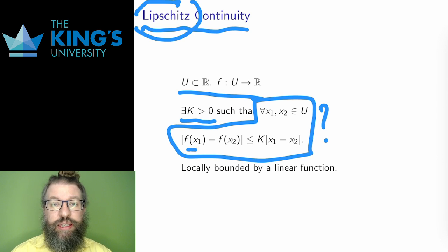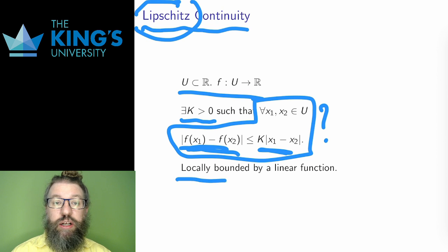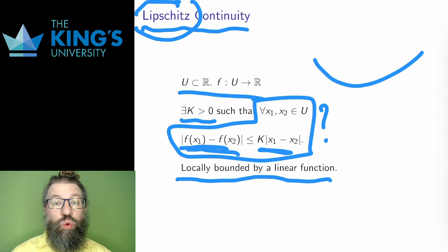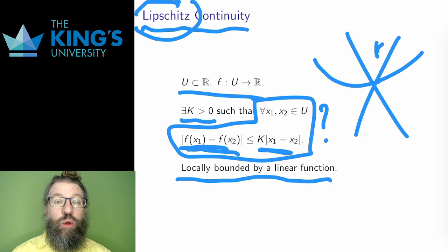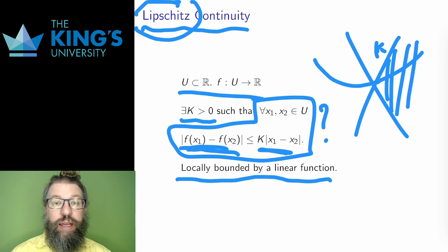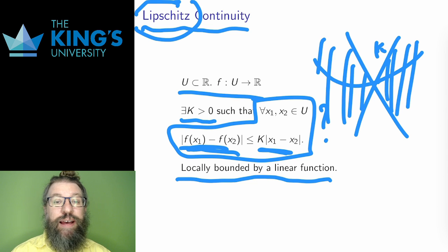Such that this property holds. What is this property? Well, the left side is a measure of the growth of the function, the difference between two values, and the right side is a linear function. So this is saying that the function F is Lipschitz continuous if it is locally bounded by a linear function. Visually, this is like saying that every point in the function I can draw a cone with slope k, and the graph of the function has to stay within this cone. It means that the function can't have too extreme a growth rate anywhere in the domain.